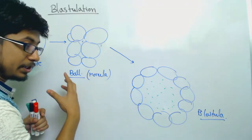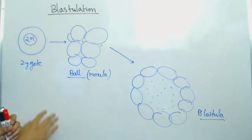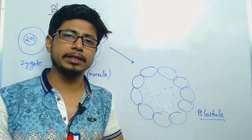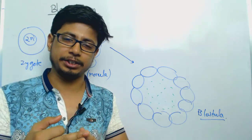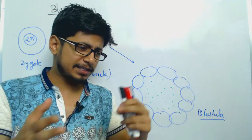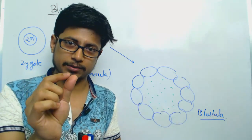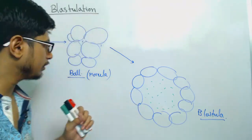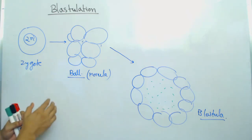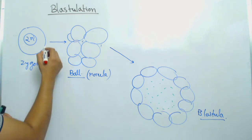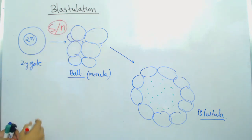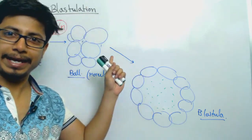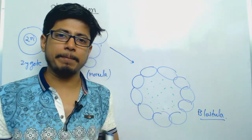When the zygote starts dividing, division is very fast. To maintain this rapid pace, cells cannot go through all stages of the cell cycle — G1, S, G2, and M. The G1 and G2 phases are removed during the first few rounds of cell division, leaving only S phase and M phase. S phase is essential because DNA replication takes place there, and M phase is the actual mitotic division, making the process extremely rapid.